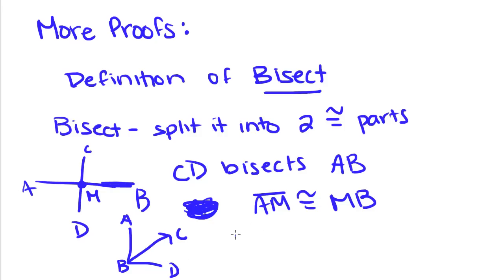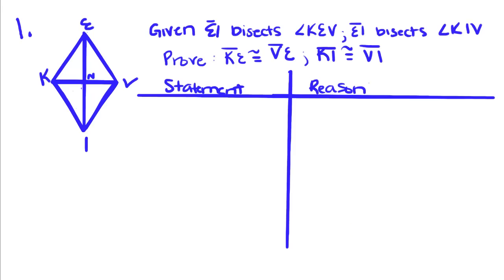So using that information, we're going to do some proofs. Given that IE bisects KEV and that IE bisects angle KIV, prove that KE is congruent to VE and KI is congruent to VI.